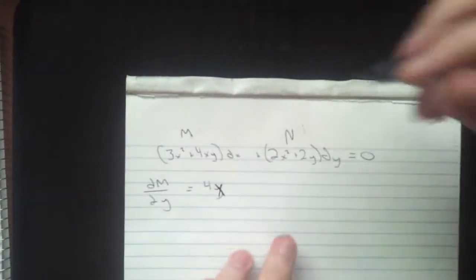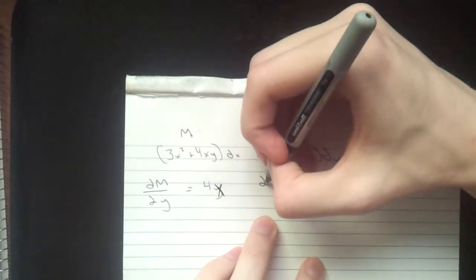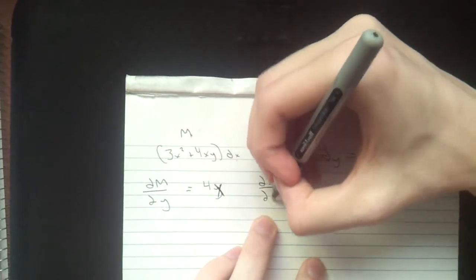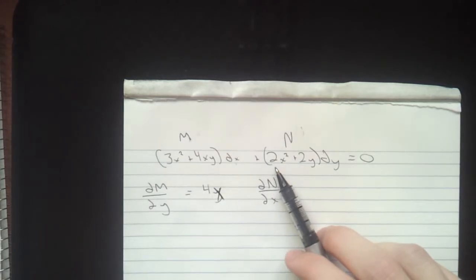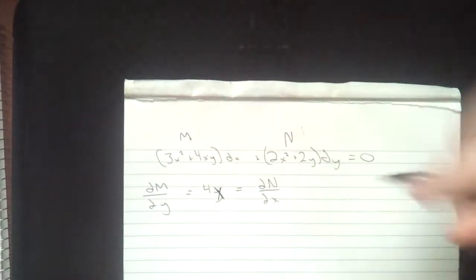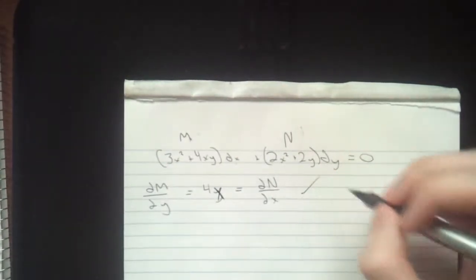So now we're going to look at N. And you're going to take ∂N/∂x, and y's disappear. You end up with 4x. Same thing. We have an exact equation.